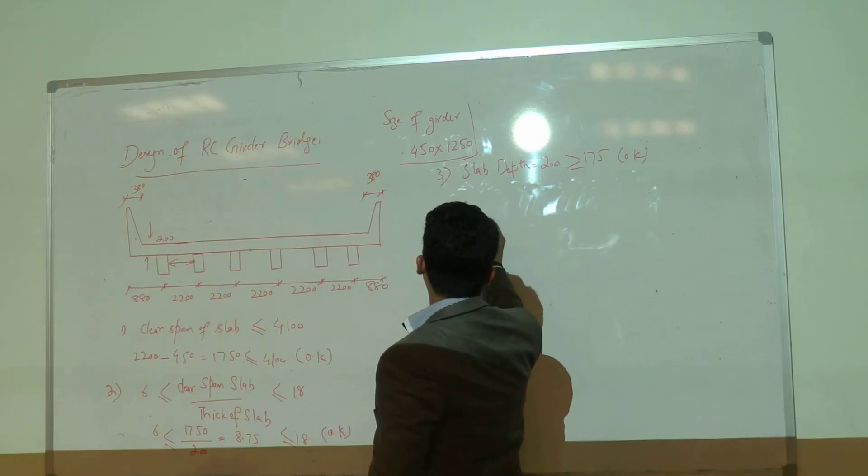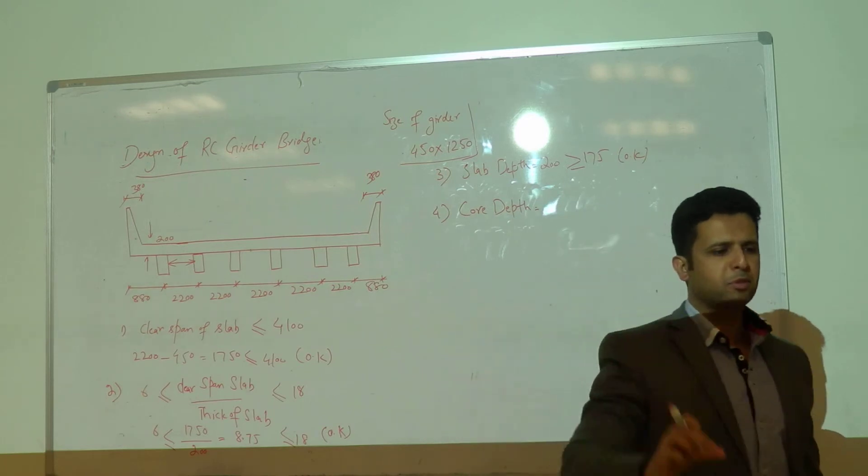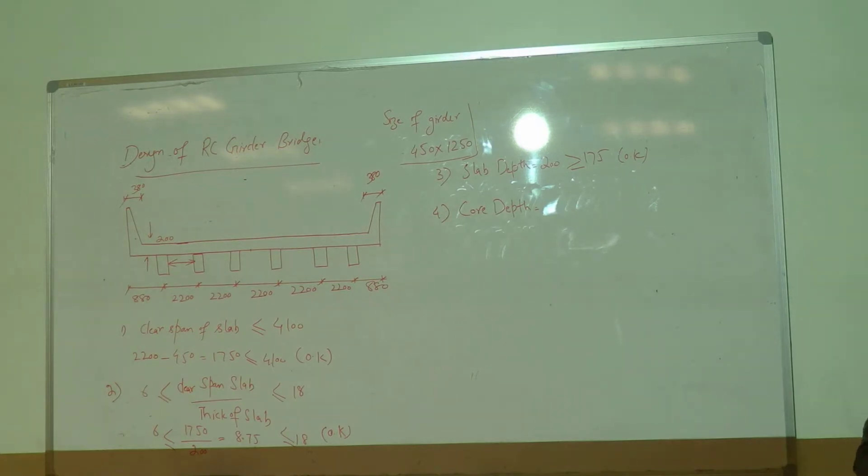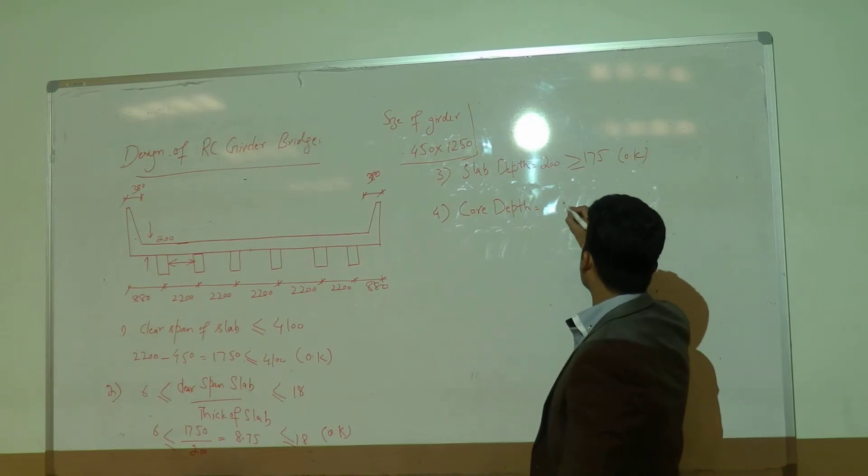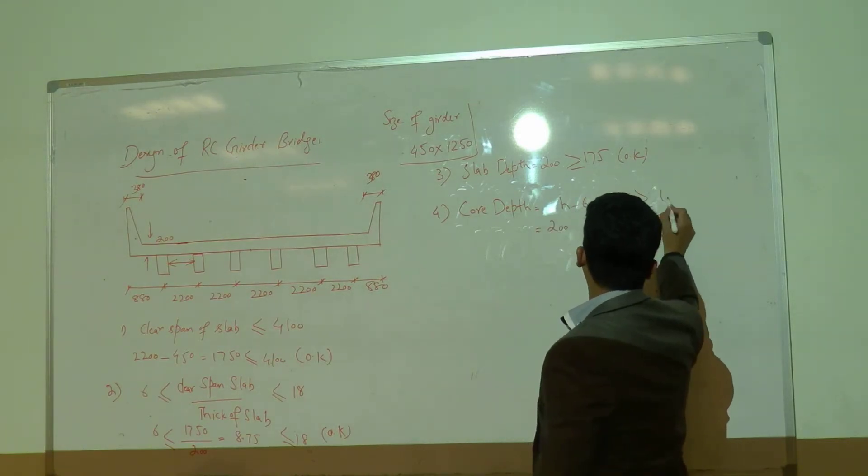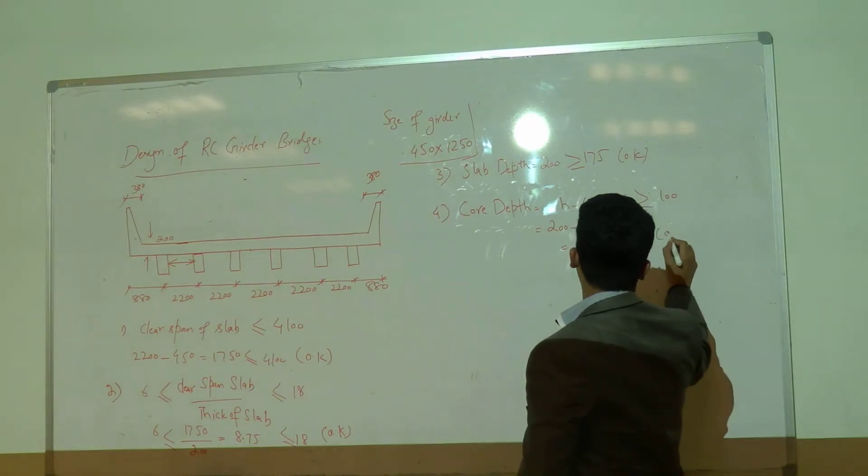Now what is core depth? Core depth is basically the depth of slab minus top cover minus 60 from the bottom. You can say h minus 60 minus 25, where h is the depth of slab, which should be greater than or equal to 100mm. So it is also fine.